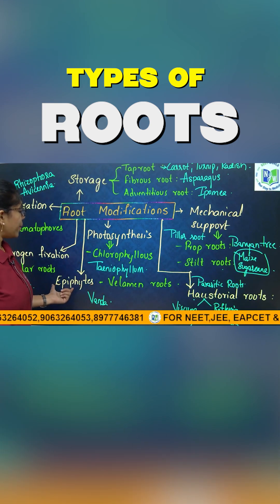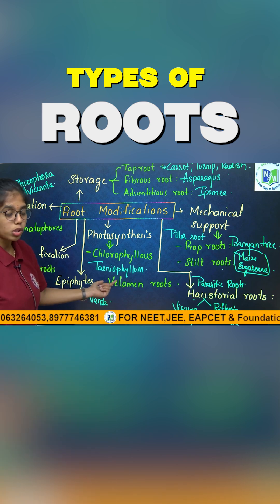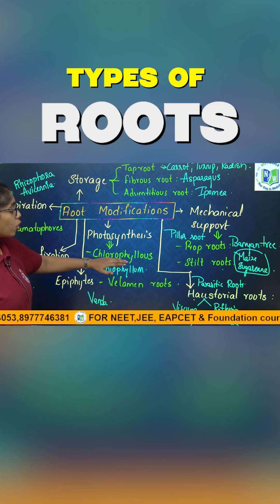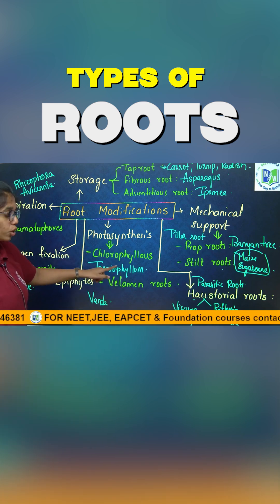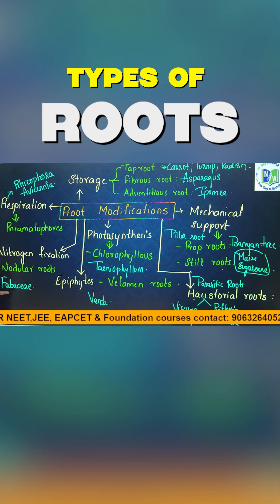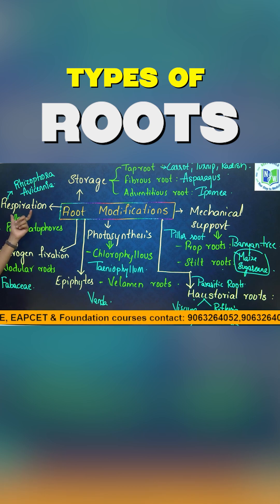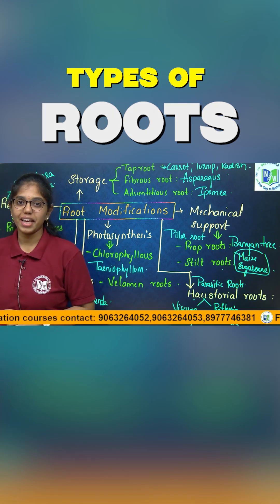Epiphytic plants include velamen roots, the best example being vanda. Chlorophyllous roots include the example taeniophyllum. Then nodular roots for nitrogen fixation — the best example is Fabaceae. The best examples for respiratory roots or pneumatophores are rhizophora and avicennia.